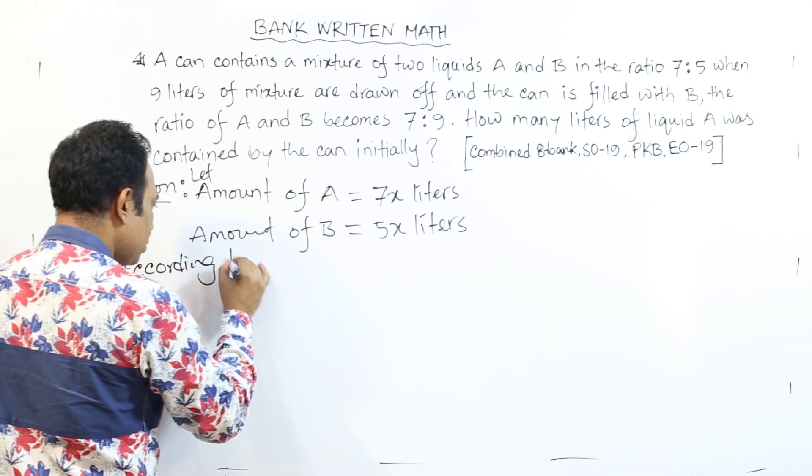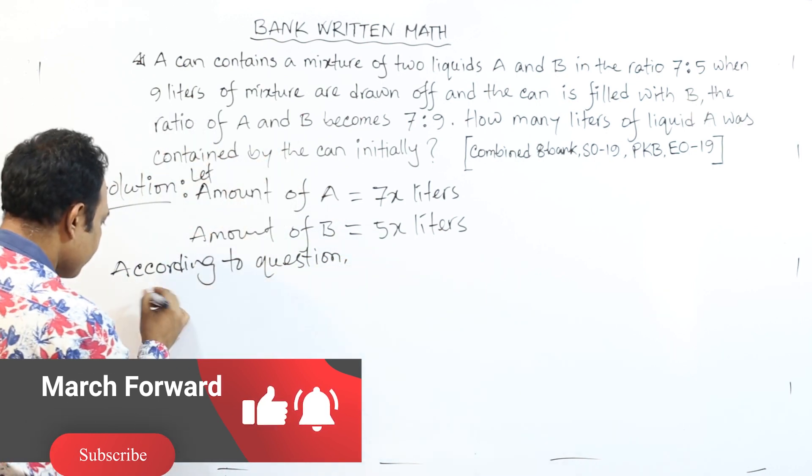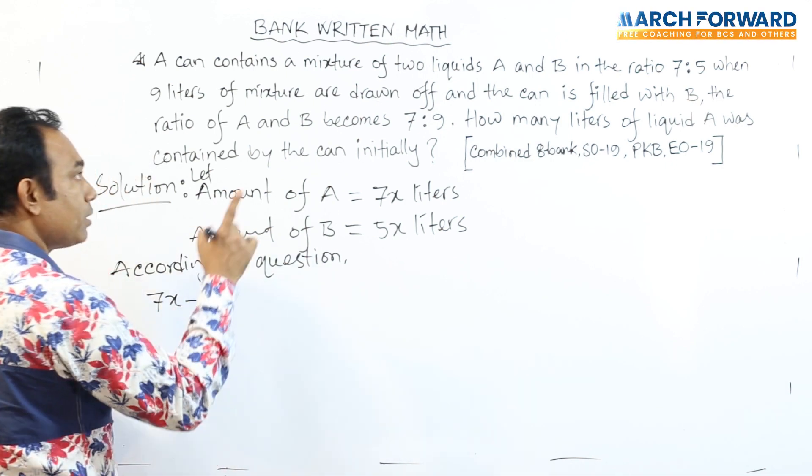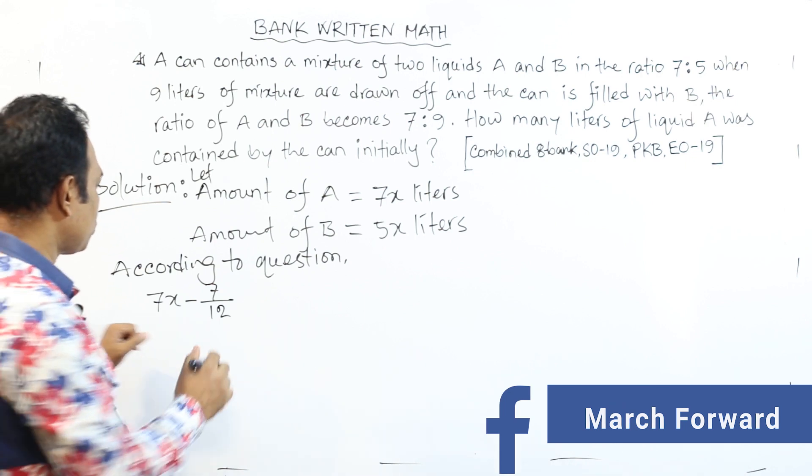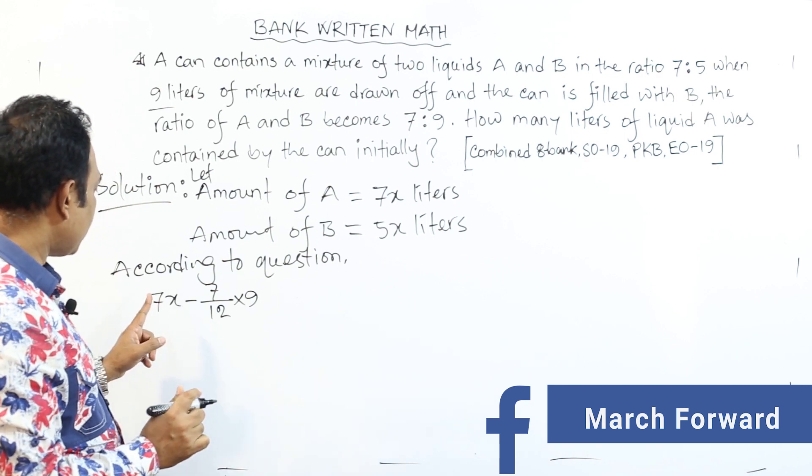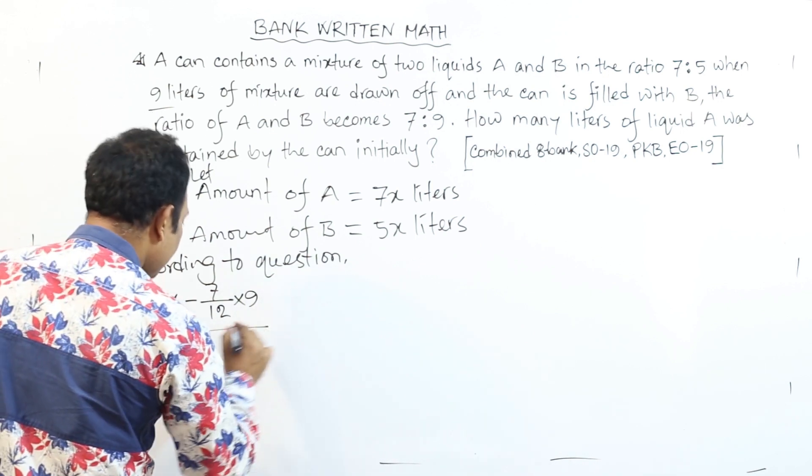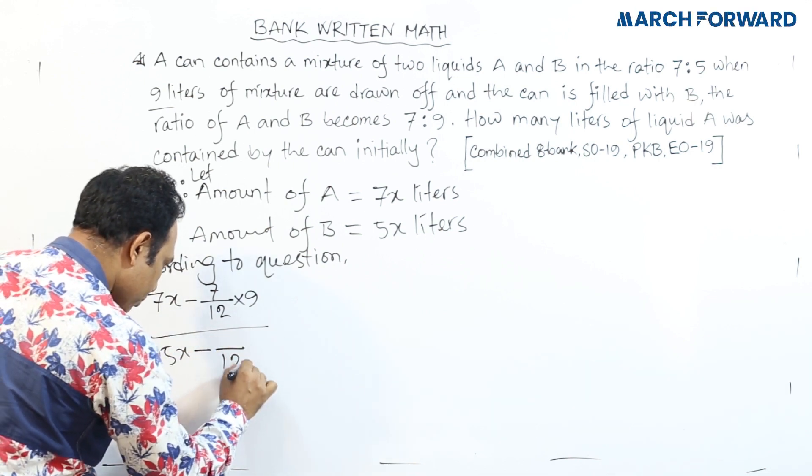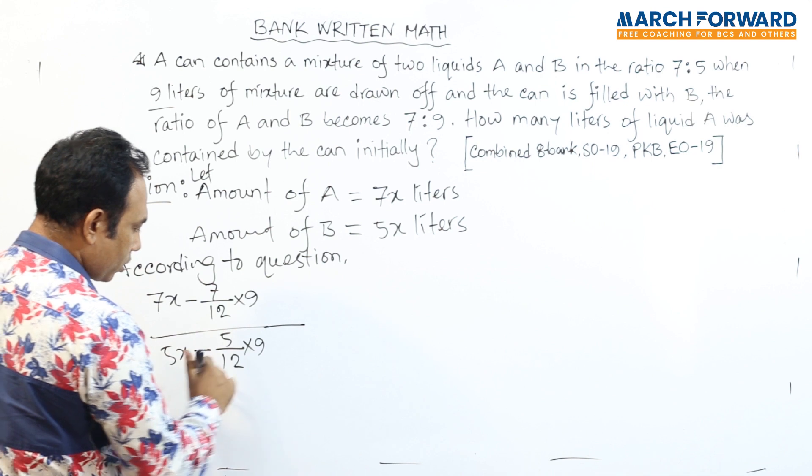According to question, we have 7x. From this 7x, we will draw off mixture. How much? This 7 plus 5 total makes 12. 12's 7 portions, that means from A liquid, this portion will go. How much portion? 9 liters. This 9 liters portion. From liquid A, we minus this, that means we remove this.